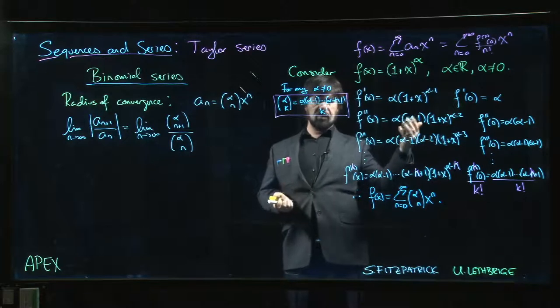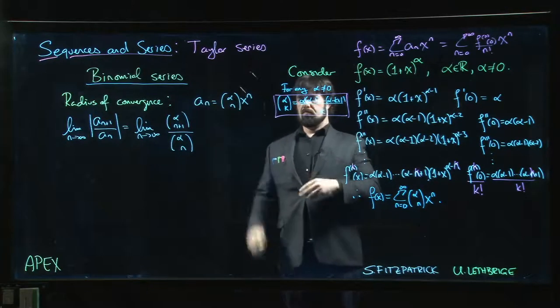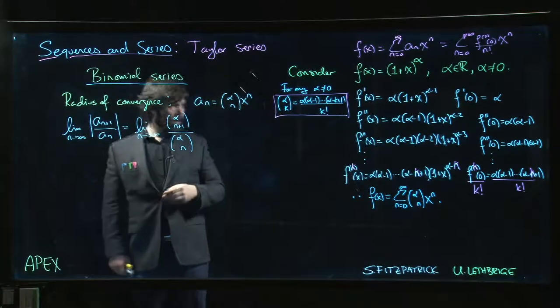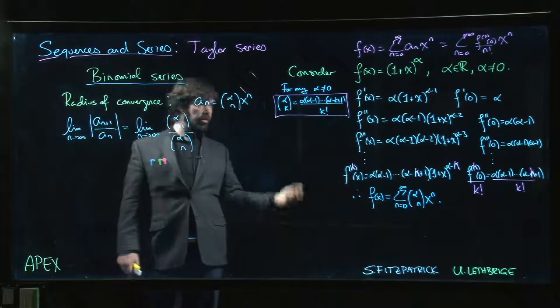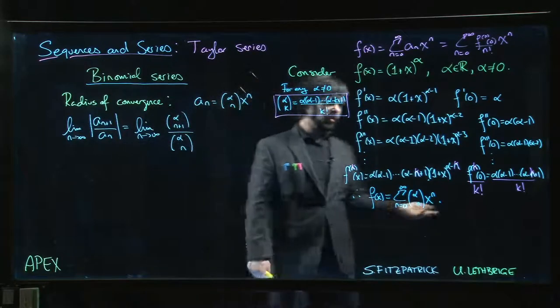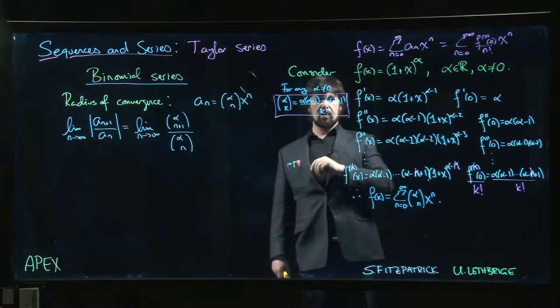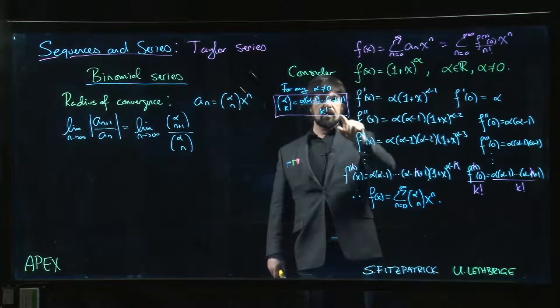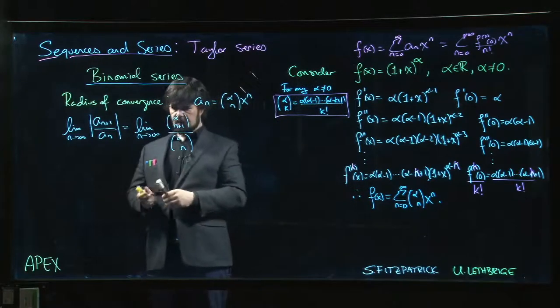And actually, we do need to be careful about absolute values here, because if alpha is not an integer - if alpha is a positive integer, eventually one of these will be zero, and that's why the series terminates. So if you're doing like (1+x) to the 7th, you get these binomial coefficients for k equal to 0 up to 7, and beyond that they're all just equal to zero. So we don't get any additional terms in the series. But if alpha is not a natural number, this keeps going forever, and eventually these terms become negative. So we do have to watch out for that.